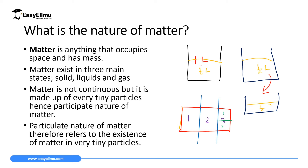Matter is defined as anything that occupies space and has mass. We have three main states of matter: solid, liquid, and gas. Matter is not continuous, but it is made up of very tiny or small particles. That is what we are going to discuss in this topic: the Particulate Nature of Matter, which means we are going to study matter in small pieces.